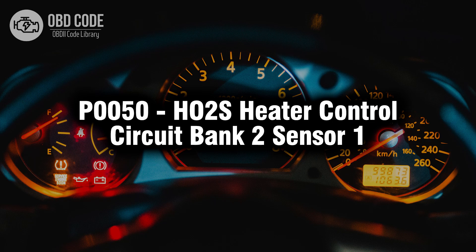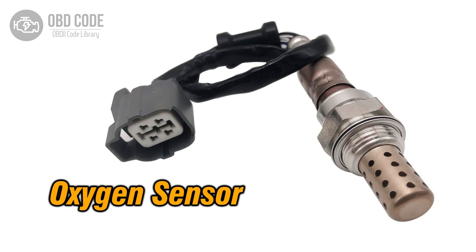In this video we will talk about code P0050, its symptoms, causes and possible solutions. The P0050 trouble code is related to the HO2S, heated oxygen sensor, heater control circuit in bank 2, sensor 1. It indicates a potential issue with the heater control circuit of the oxygen sensor positioned in the exhaust system's second bank and first sensor location. This code is often found in vehicles with advanced emission control systems.